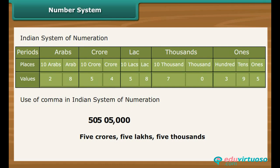The second comma comes two digits later, five digits from the right. It comes after the ten thousands place and marks lakh. The third comma comes after another two digits, seven digits from the right. It comes after ten lakh.